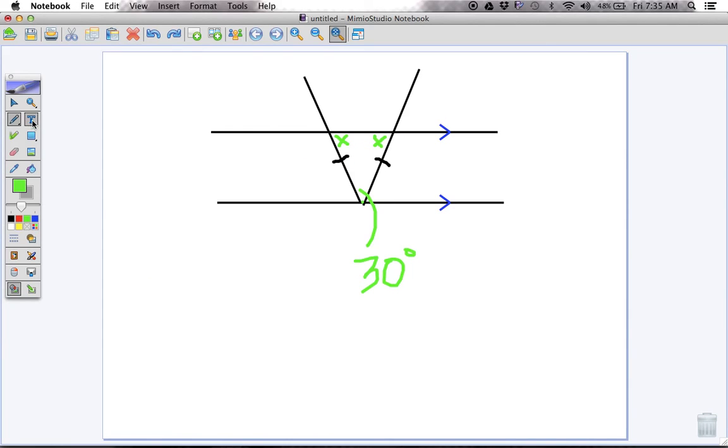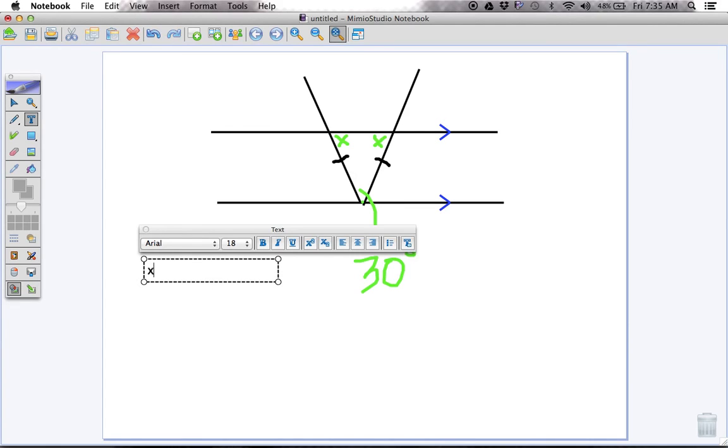In this case, we have a 30 degree angle here and we have x and x. And they're both called x because they are the same. That's the whole point of an isosceles triangle. These two are the same. So if we look at it, we have x, because of the laws of the triangle, plus x plus 30 must equal to 180, like all triangles.